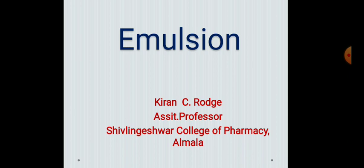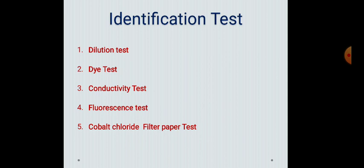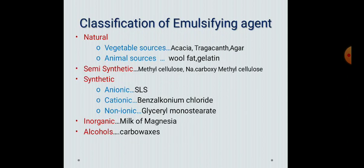Before we start, let's recall what we discussed in the last video. We discussed the definition of emulsion, the different types of emulsion, the different identification tests of emulsion — dilution, dye, conductivity, fluorescence and cobalt chloride filter paper test. Then we discussed the main part, that is emulsifying agents — the ideal properties an emulsifying agent must possess for a stable emulsion, and the classification of emulsifying agents: natural, semisynthetic, synthetic, inorganic, and alcohols.